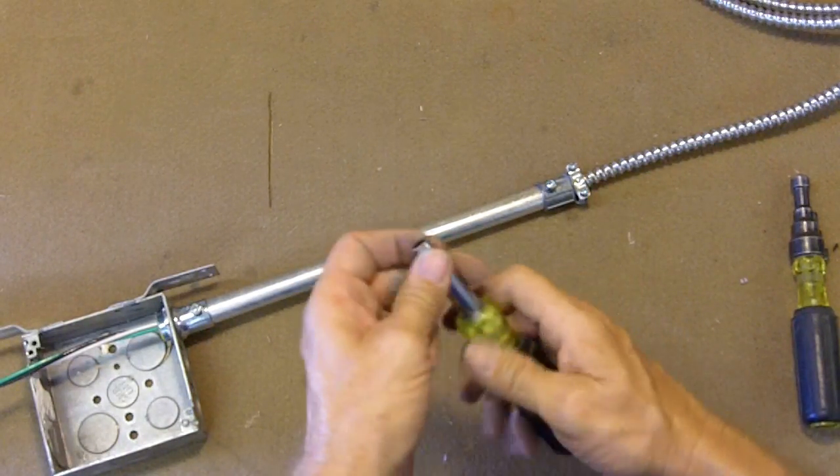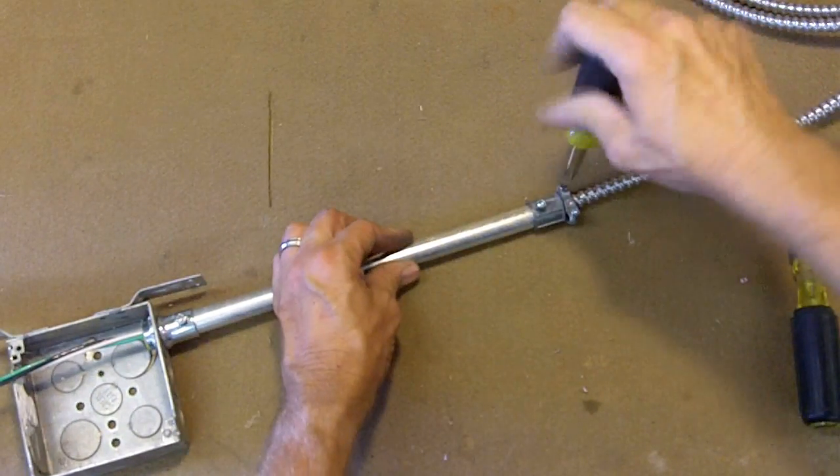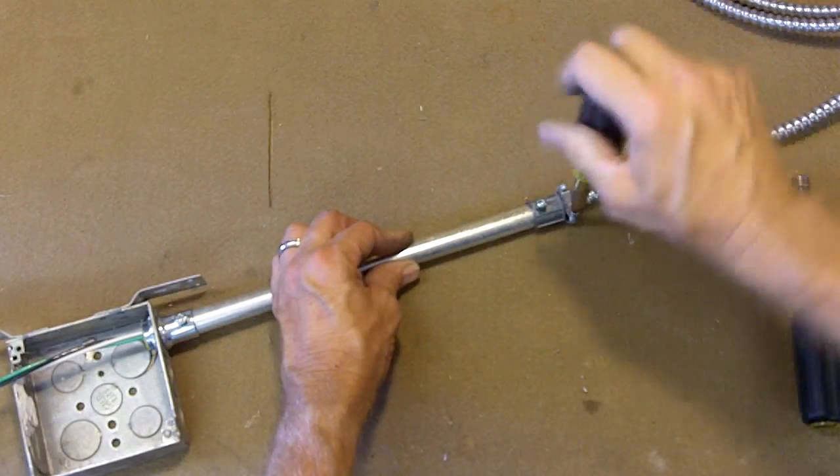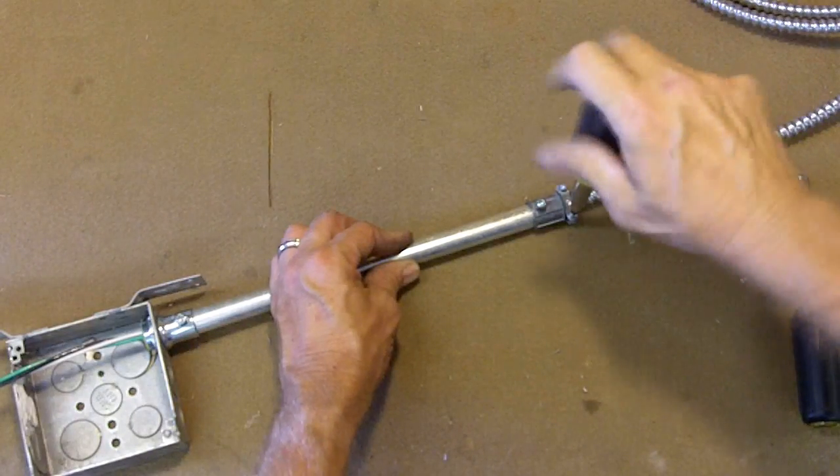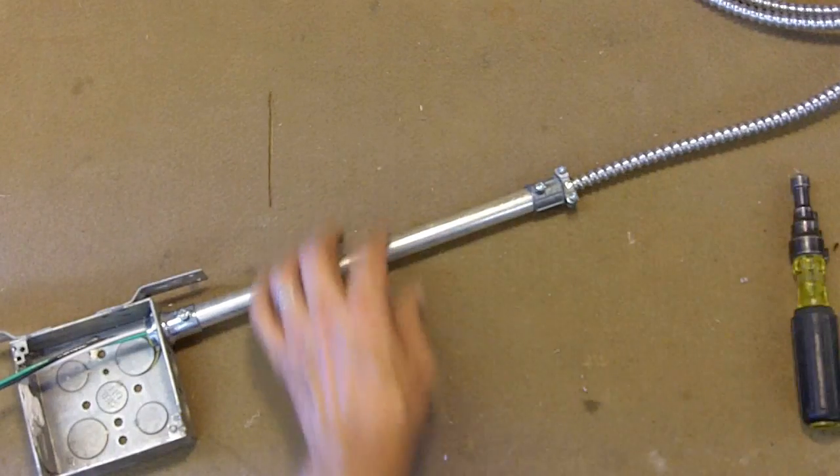That's a nut driver. 5-16ths it looks like. We'll go ahead and tighten this up. You don't want to get it too tight as to crimp and pinch the MC. Let's go ahead and tighten that up. Kind of go like that a little bit.